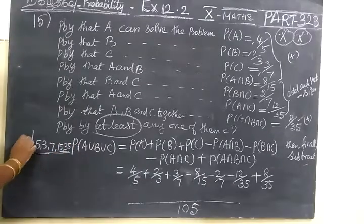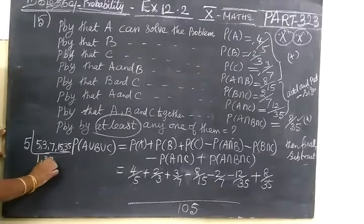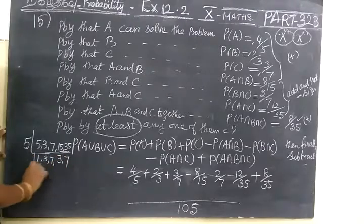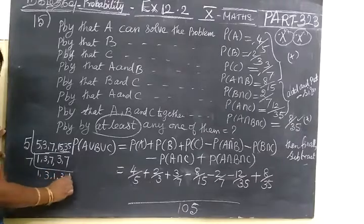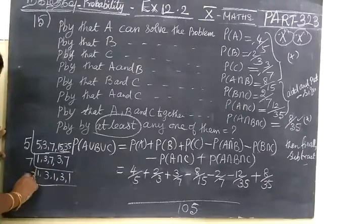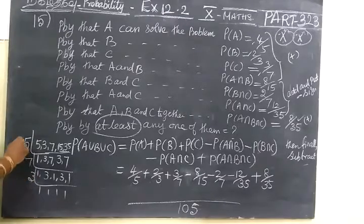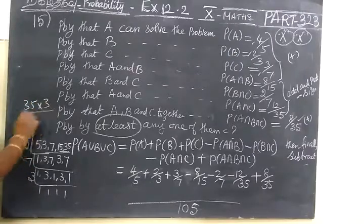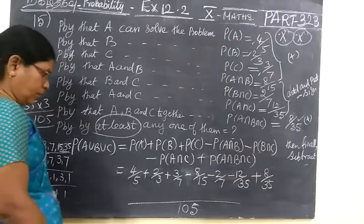Here you can take 5 table. 5 table means 1 time, 3, 7 you write as it is. Then 3 times, 7 times. Now take 7 table. 1, 3, 1, 3, 1, 3, 1. So multiply 5, 3, 7, 35. Then 35 into 3, 105. So here you write 105.